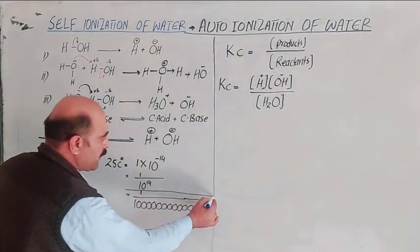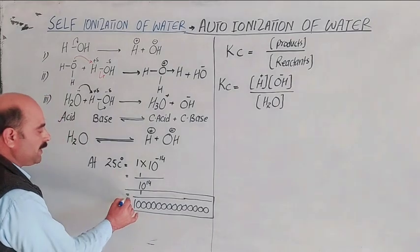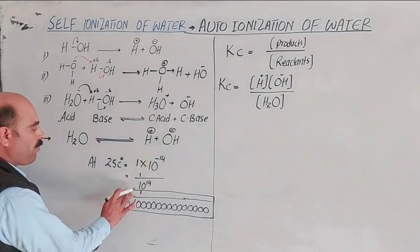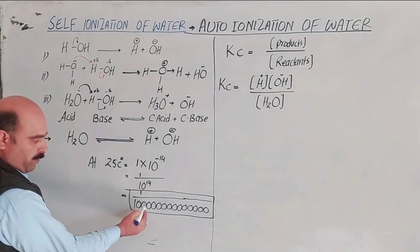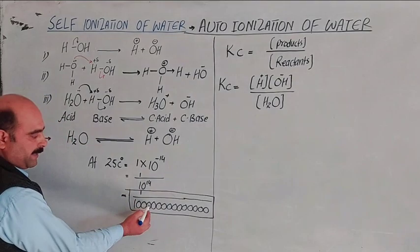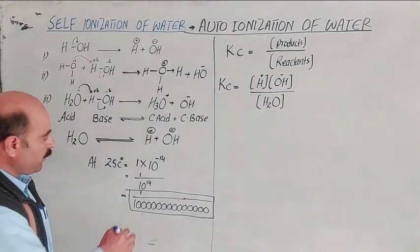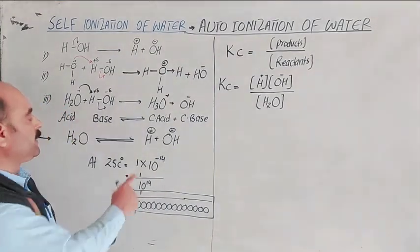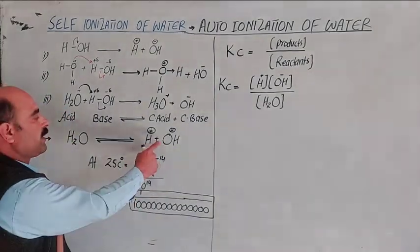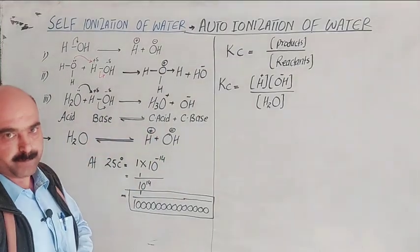When the temperature is 25 degrees Celsius, out of 10 raised to the power 14 water molecules, only one molecule will be ionized into hydrogen ion and hydroxide ion.